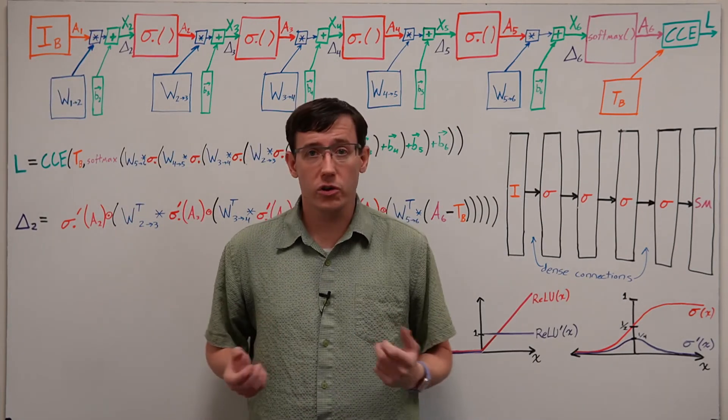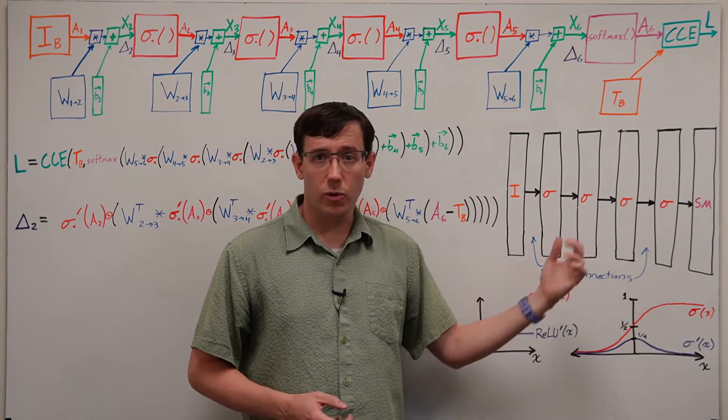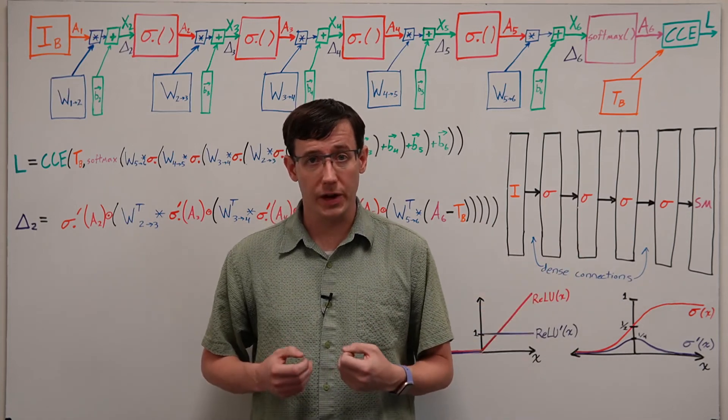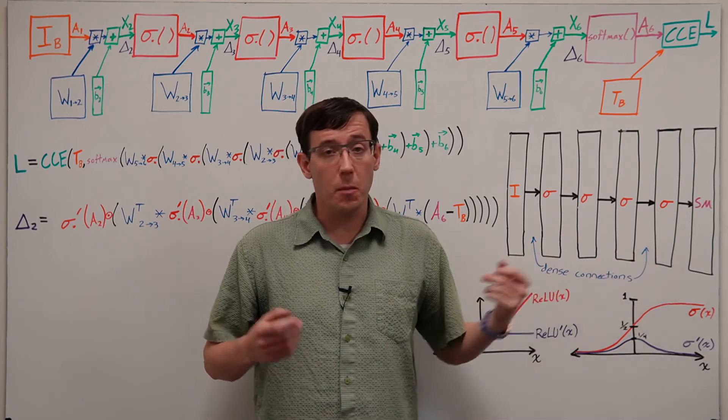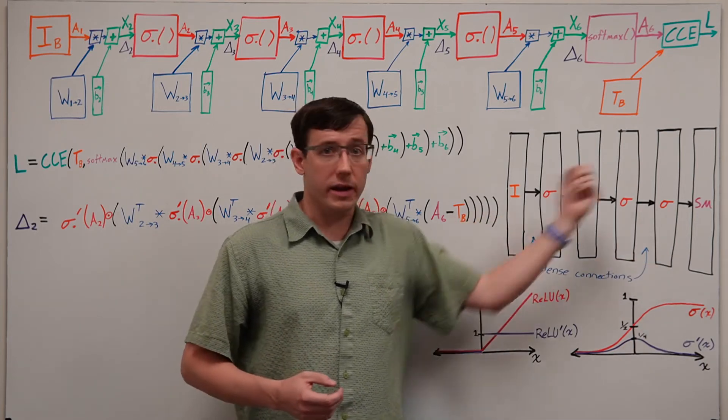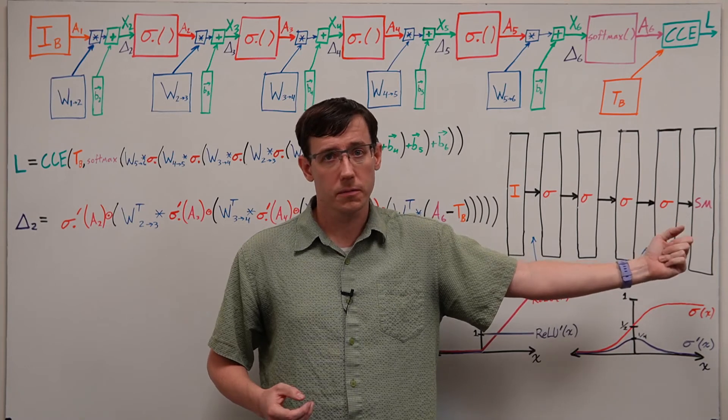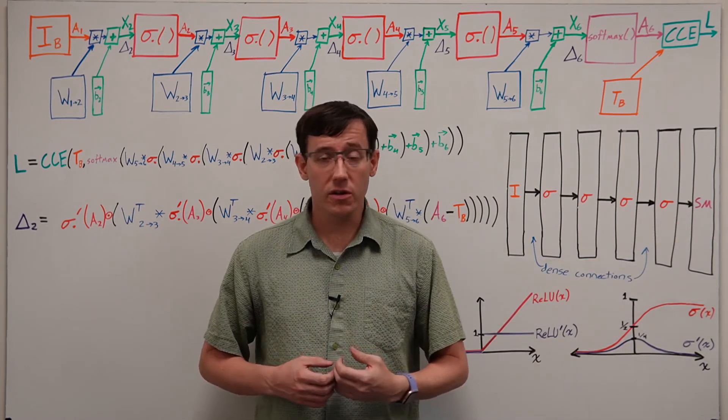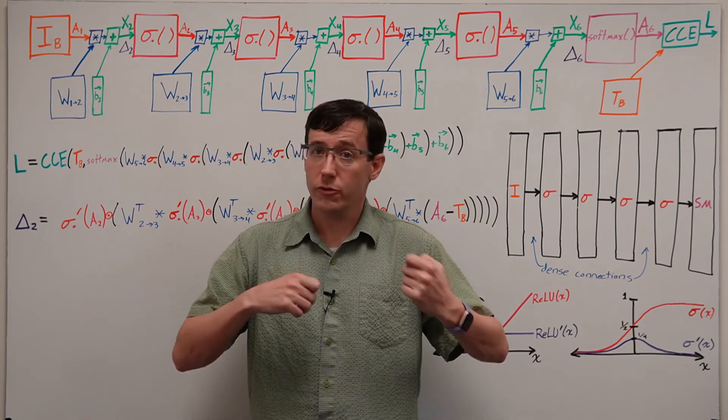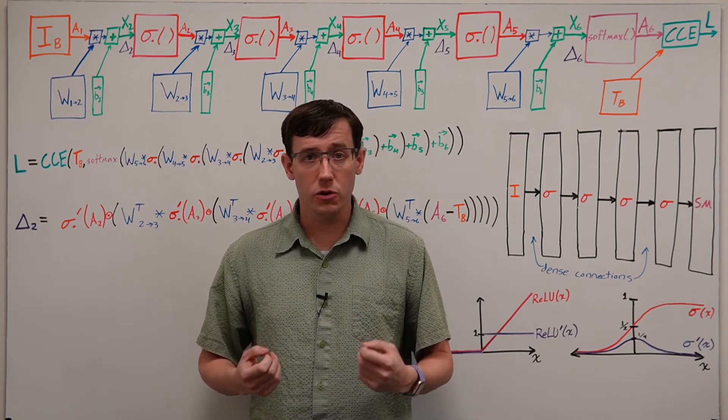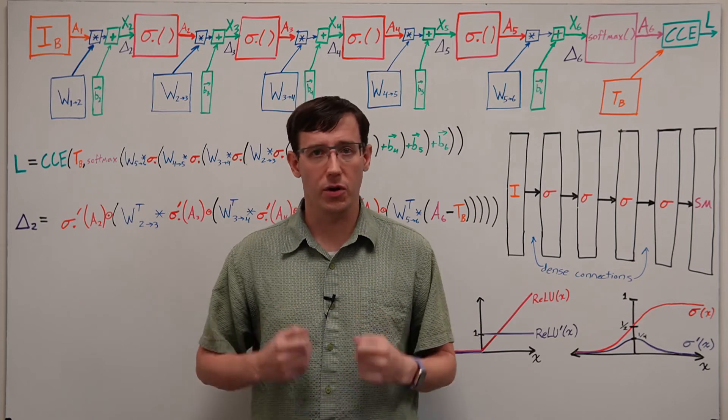Prior to the 2010s, sigmoids were the most popular activation function for neural networks, and so the vanishing gradient problem was a big obstacle to training deep neural networks. And a big part of the reason that deep learning took off around a decade ago was that a few different approaches were devised to overcome the vanishing gradient problem.